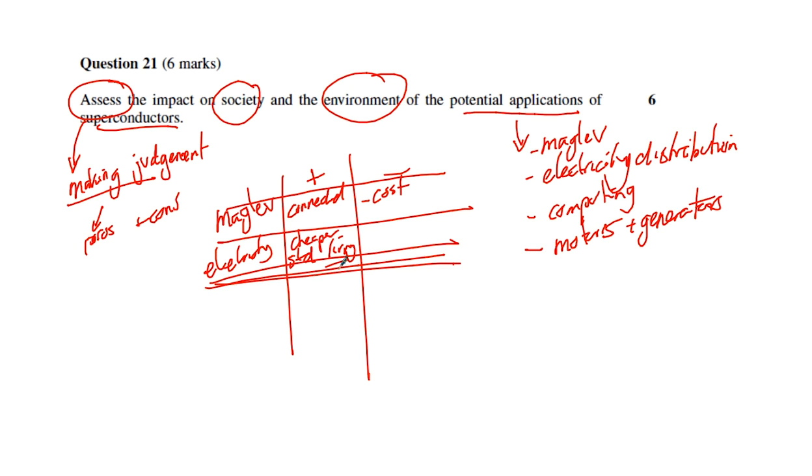If we look at the environment in terms of positives and negatives, let's look at the maglev. We're looking at large infrastructure, so damage to the environment setting up these tracks - that's a negative impact. But you could also argue maglevs use superconductors so you haven't got fuel being used, therefore not burning carbon dioxide gases or greenhouse gases, so that has a positive impact on the environment. Electricity distribution has a negative impact on the environment because you're setting up larger infrastructure to cool these lines.